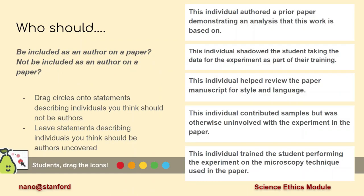In Pear Deck there is now an activity for you to complete. On this slide are several examples of activities that a scientist may complete with regards to a project. For each of the statements listed, drag a circle on the statements that you think describe individuals that should not be authors. Leave statements describing individuals you think should be authors uncovered.